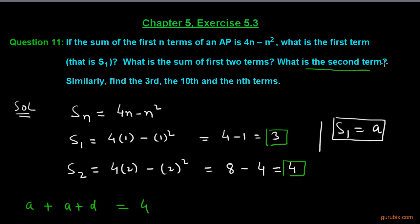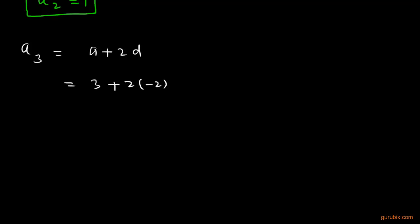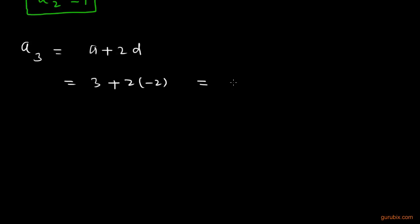Now we have to find the third term. The third term is A3 = A + 2D. A = 3 and 2D = 2×(-2) = -4. So A3 = 3 + (-4) = 3 - 4 = -1. Therefore, the third term is -1.